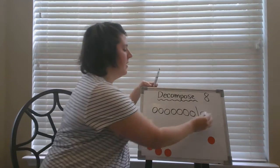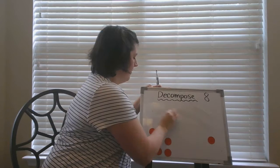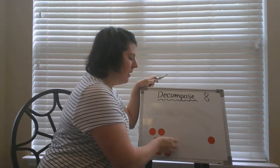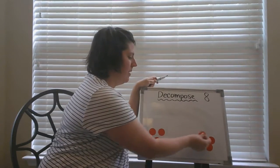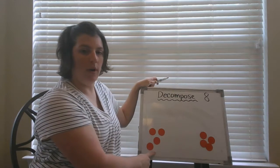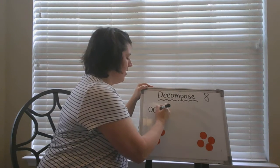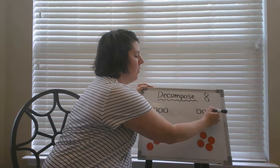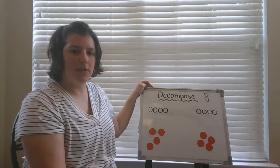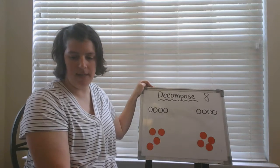Let me see if there's another way I could draw that. Another way I showed it was with a group of four and a group of four. Let me draw four over here and four over here. So I can draw pictures to show my thinking.